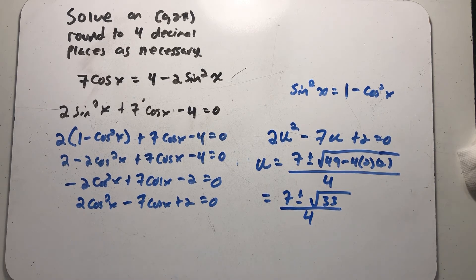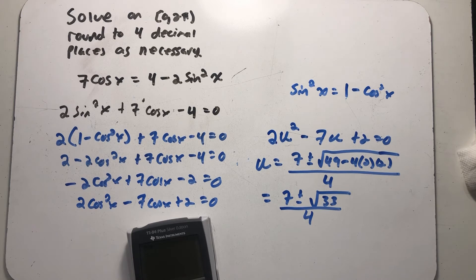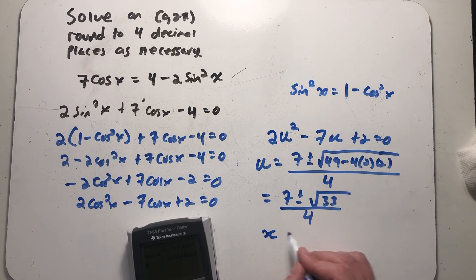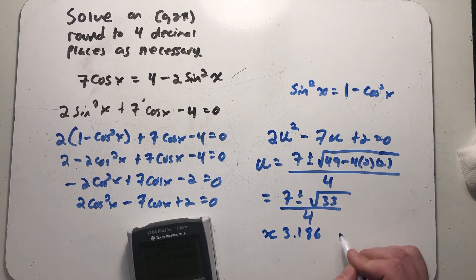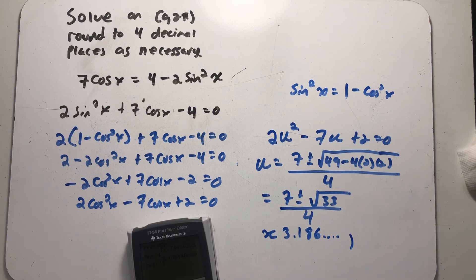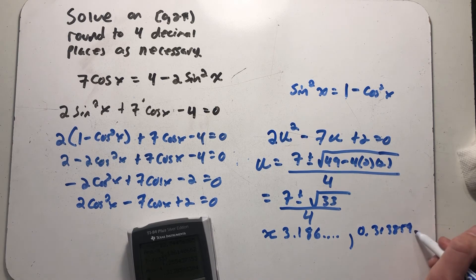Alright so I have 7 plus or minus the square root of 33 all over 4. I'm not really ready for decimal approximations yet but I'm just gonna think about those numbers. So 7 plus the square root of 33 divided by 4. And so when I get that, that's not one of my answers yet because this is a value of u, but 3.186 will give me something to think about in a minute. And then I can do the same arithmetic with 7 minus the square root of 33 all over 4. That's 0.313859 dot dot dot.